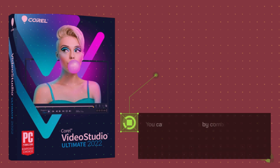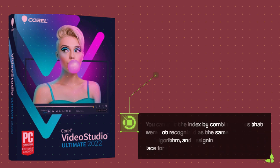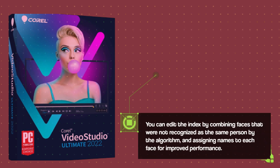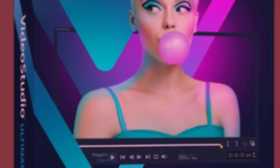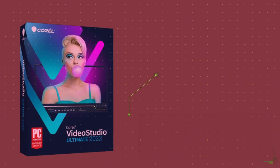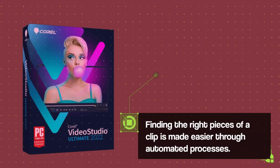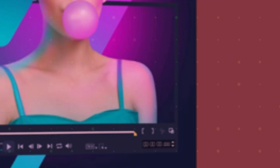You can edit the index by combining faces that were not recognized as the same person by the algorithm, and assigning names to each face for improved performance. Finding the right pieces of a clip is made easier through automated processes.